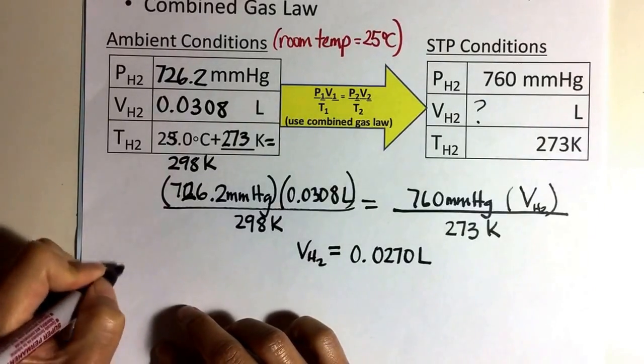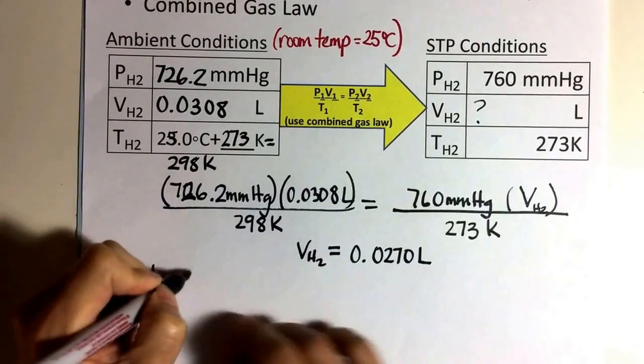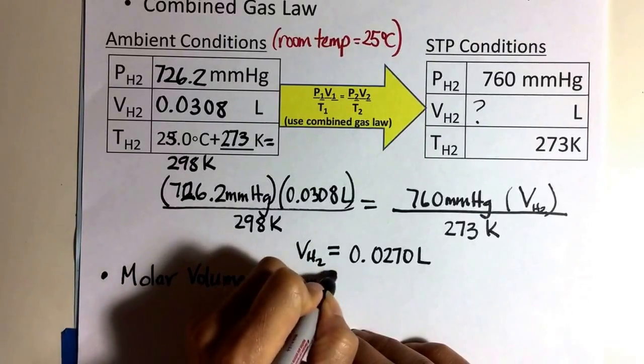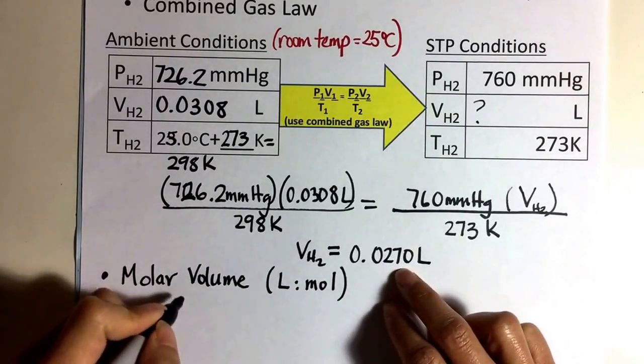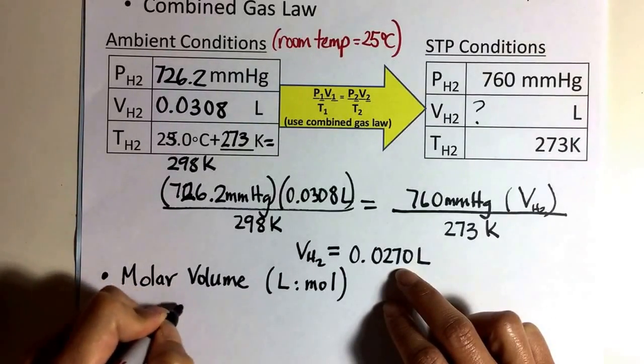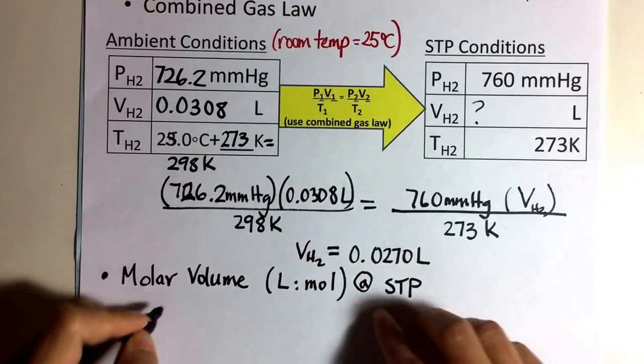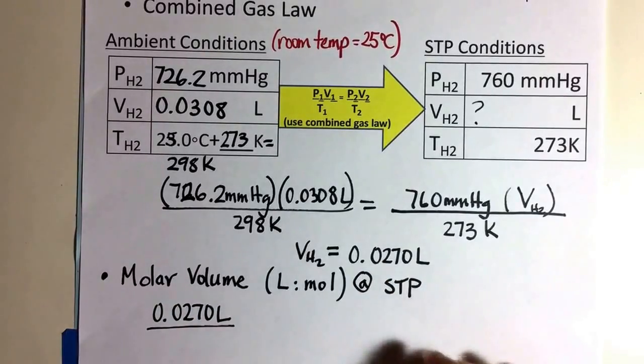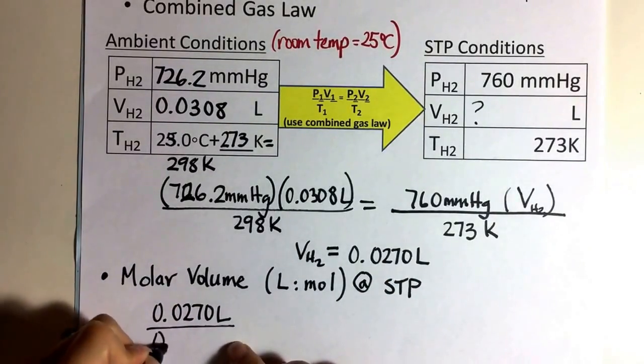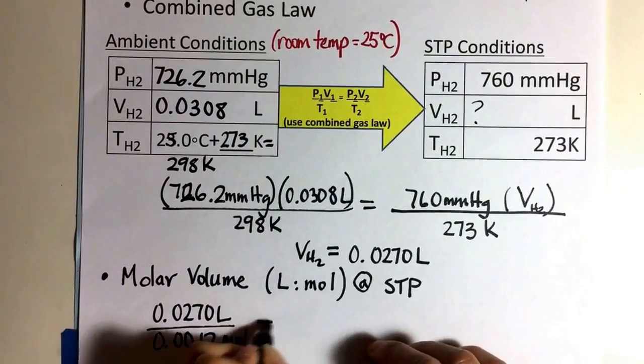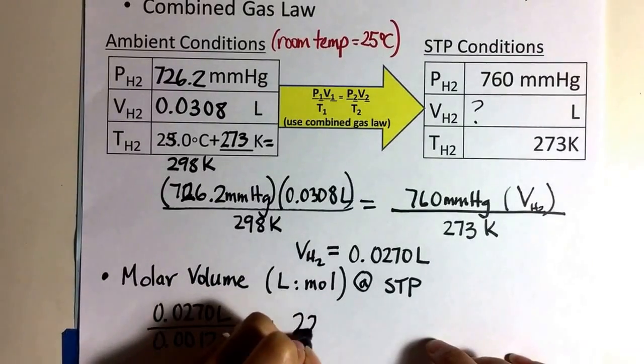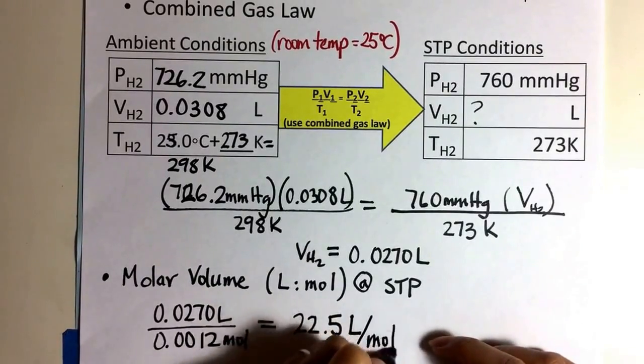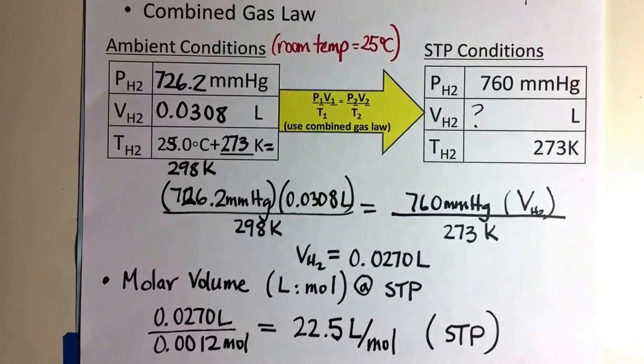So this is my final step. My final step is to find molar volume. And molar volume, like we said earlier, is a ratio. It's a ratio of liters to moles. So it's dividing those two. So my liters of hydrogen gas at STP condition is, and this is all at STP conditions. So the liters is 0.0270 liters. The moles, if you recall, is of hydrogen gas is 0.0012 moles. When you divide those two numbers, you will see a very familiar number or a number that's similar to that familiar number. So 22.5 liters per mole. And this is what happens at STP conditions. This is how we experimentally determine this.